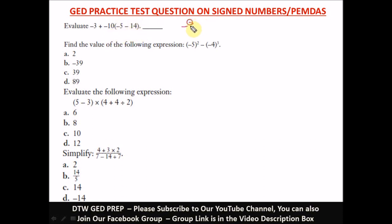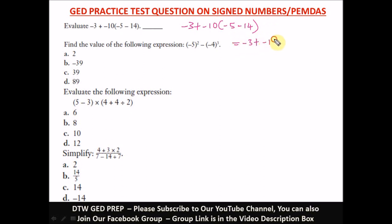First, let's solve what's in the parenthesis. We have negative 5 minus 14. We're going to add these two numbers and the sign will be negative, giving us negative 19. We add 5 plus 14 which is 19, and we leave the sign negative because the biggest number here has a negative sign.